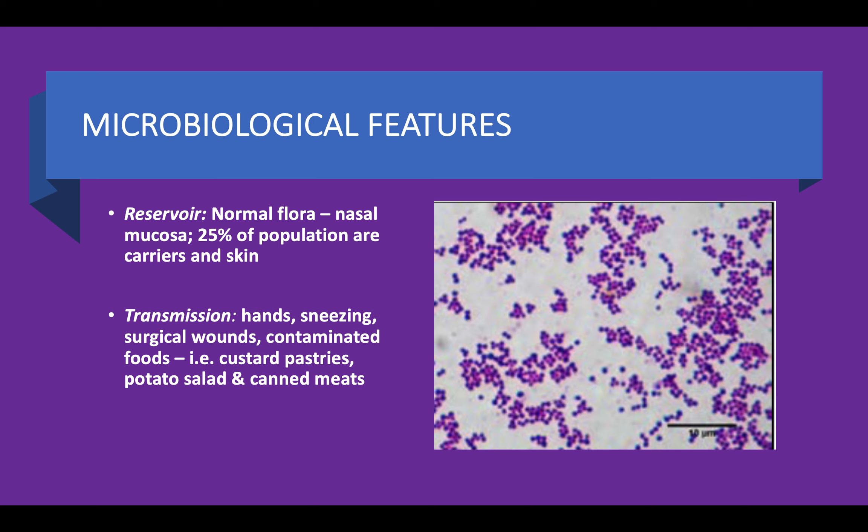Transmission usually occurs via hands, sneezing, and surgical wounds, as well as contaminated food such as leftover potatoes and canned food, since Staphylococcus aureus loves to grow on these things. Each time you open a canned food, try to finish it or seal it and put it in the fridge, otherwise Staphylococcus aureus can potentially grow on your food.